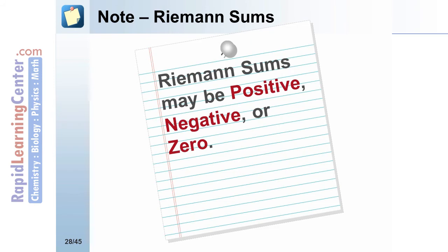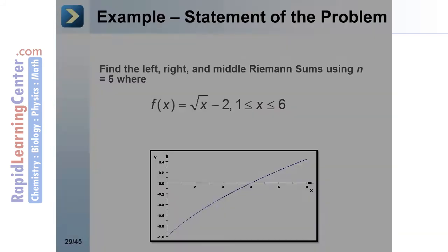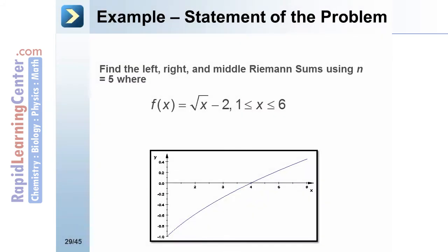Riemann sums may be positive, negative, or zero. Example: Find the left, right, and middle Riemann sums using n equals 5, where f(x) equals the square root of x minus 2, where x is between 1 and 6 inclusive.